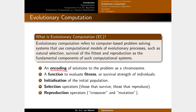The encoding scheme allows us to model a possible solution to the problem as some kind of chromosome inside the algorithm. Then we need a fitness function to evaluate the quality of each solution. We also need an initialization scheme to bootstrap the process, a selection operator to decide which solutions survive to the next generation, and a reproduction operator — typically crossover and mutation — to create new solutions from existing ones.